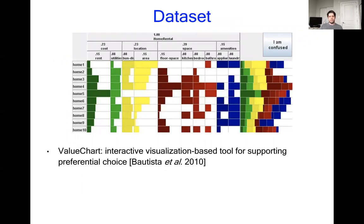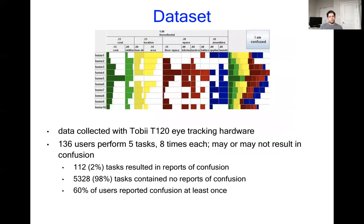Before talking about our method, I'm just going to briefly cover the dataset used. This dataset is composed of user interaction with the value chart, which is an interactive visualization-based tool for supporting preferential choice. In this case, selecting the best home from amongst ten choices in terms of the cost, location, space, and amenities. The data was collected with a Tobii T120 eye tracker, and 136 users performed five tasks like the one just provided, repeated eight times each.